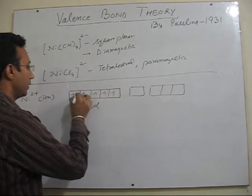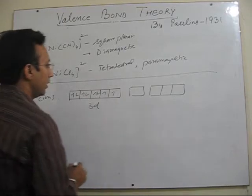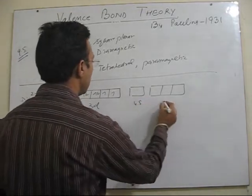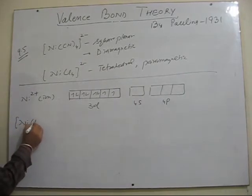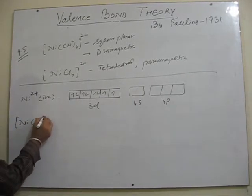3d8: 1, 2, 3, 4, 5, 6, 7, 8. Now in this case for accommodating 4 chloride ions.